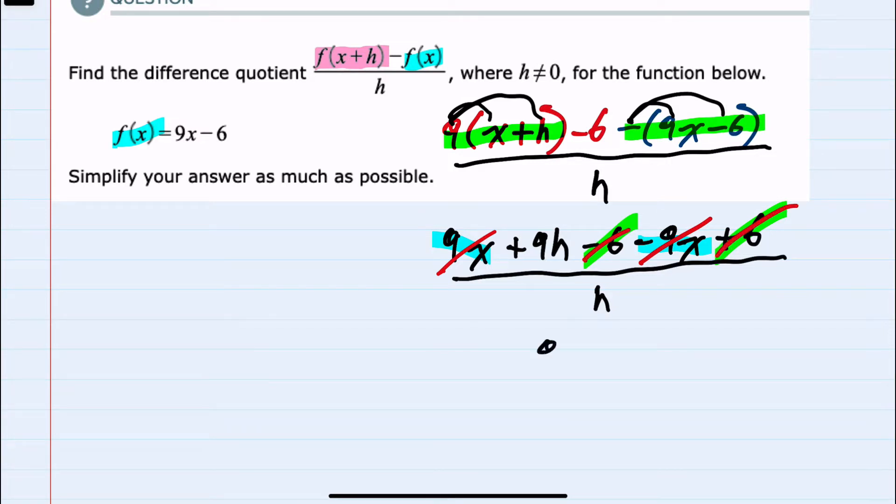We're left in the numerator after combining like terms with just a 9h over the h. And from here since the h's are in both the numerator and the denominator, they will cancel. So after simplifying as much as possible, our final value is just 9.